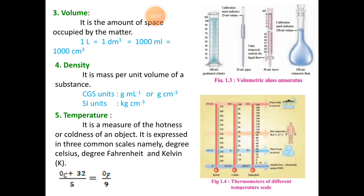Next is density. Density is mass divided by volume — if we know the mass and volume of a matter, we can easily calculate density. It is defined as mass per unit volume of a substance — that is density. Its CGS unit is gram per centimeter cube, and its SI unit is kilogram per meter cube.